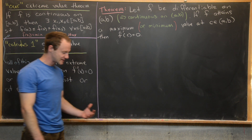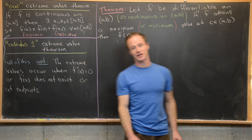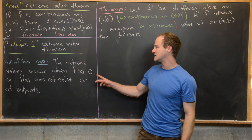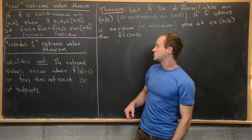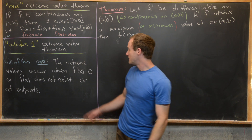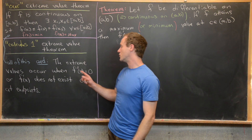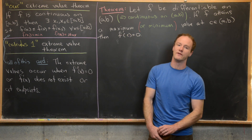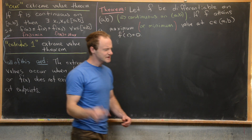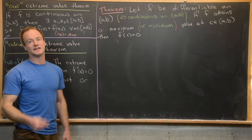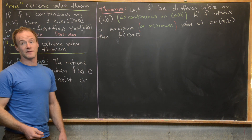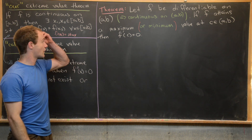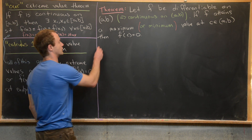Here we're assuming differentiability everywhere on the interval. I want to point out that this is actually enough information to prove the remaining cases — that is, that the extreme value can also occur at the endpoints or where the derivative does not exist. Maybe somebody can fill in those details in the comments. Let's go ahead and get to this proof.